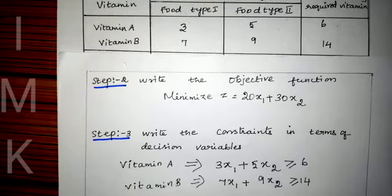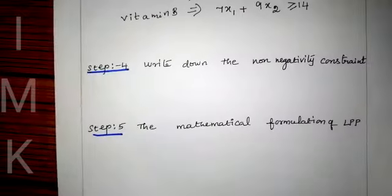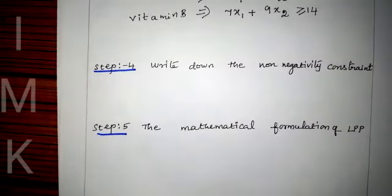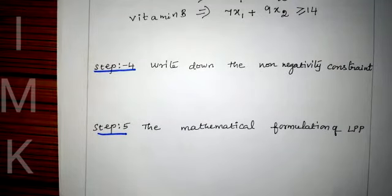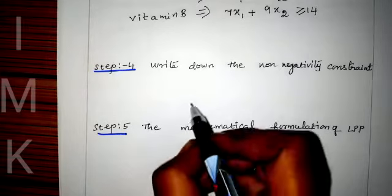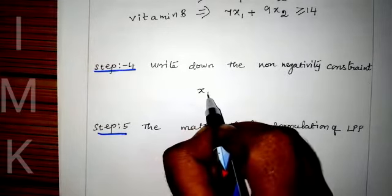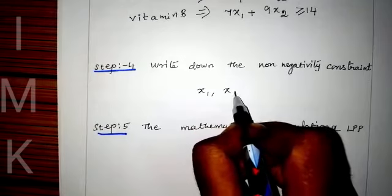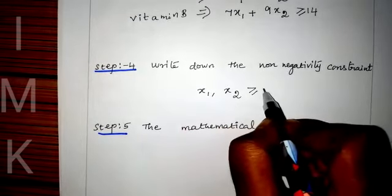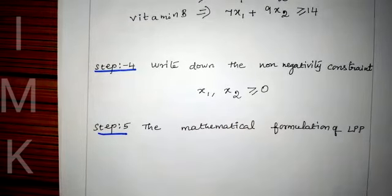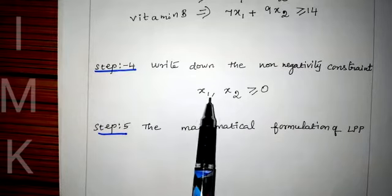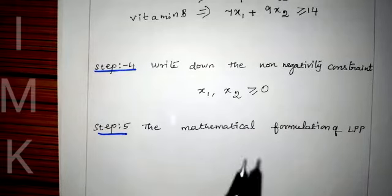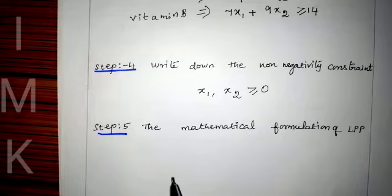The constraints for vitamin A and vitamin B are complete. The next step is to write the non-negativity constraints. We have two variables, x1 and x2. These two variables, x1, x2 ≥ 0 — meaning the variables are always positive.